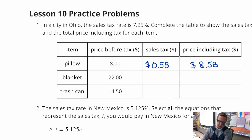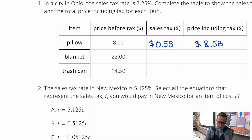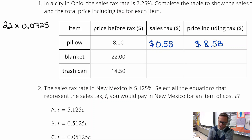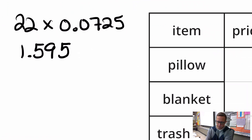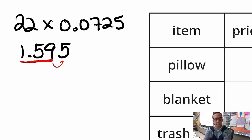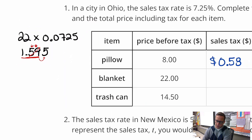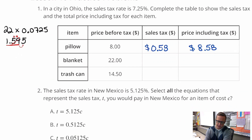For the blanket, it's a $22 blanket. So we're going to do 22 times 0.0725. When you do that, you're going to get 1.595. The thing to keep in mind about dollar amounts is that you want to keep it down to dollars and cents. That 9 is going to round up, making it 60. So the tax is going to be $1.60. Add that on to $22 and you get $23.60.